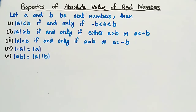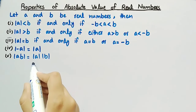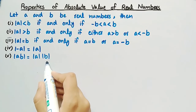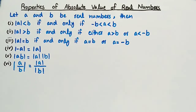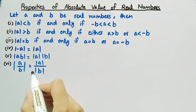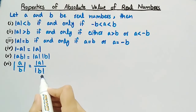The fifth property is: the absolute value of the product AB is equal to the absolute value of A times the absolute value of B. The sixth property is: the absolute value of A divided by B is equal to the absolute value of A divided by the absolute value of B.